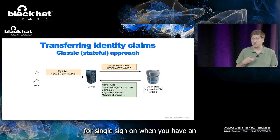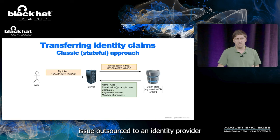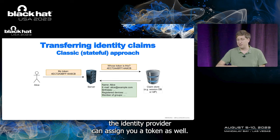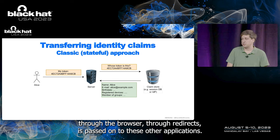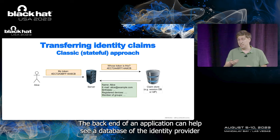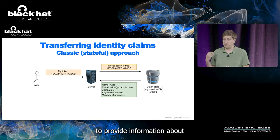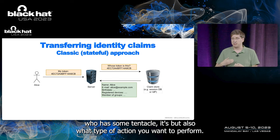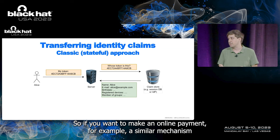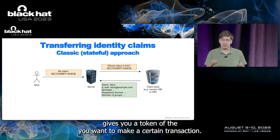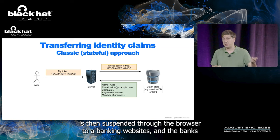A similar system is also used for single sign-on when authentication is outsourced to an identity provider. That verifies your credentials and then gives you access to multiple applications running on different servers. The identity provider can assign you a token, which is passed through the browser via redirects to these other applications. The backend of an application consults the database of the identity provider to get back information about your identity. Similarly, this can be used for online payments — a webshop gives you a token after you initiate a transaction, which is submitted through the browser to a banking website.